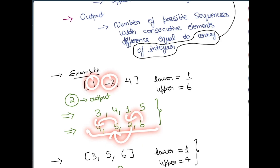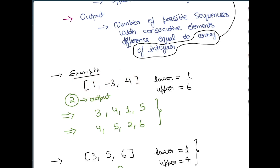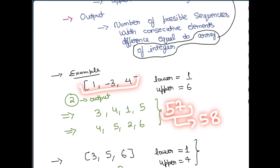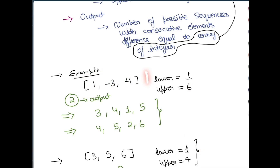Another valid sequence is [5, 6, 3, 7] — wait, let me reconsider. If you forget about lower and upper bounds, you can have any number of sequences. For instance, starting with 57, the next element is 58 (difference 1), then 55 (difference -3), then 59 (difference 4). Without bounds, you can form infinite sequences.